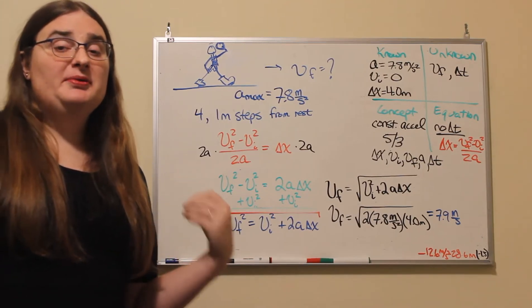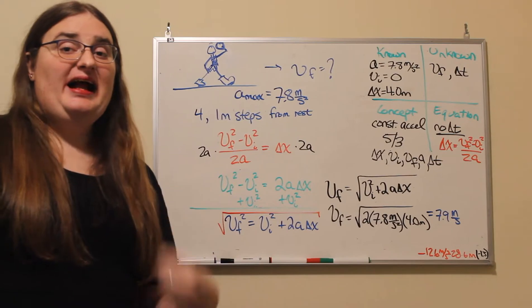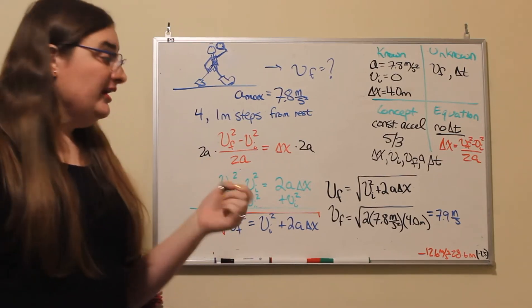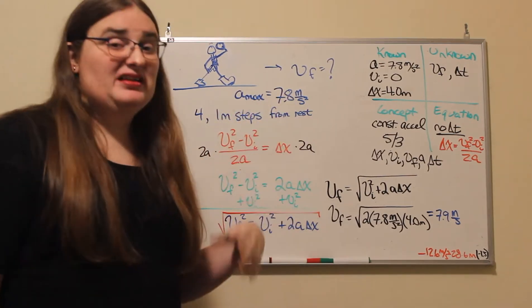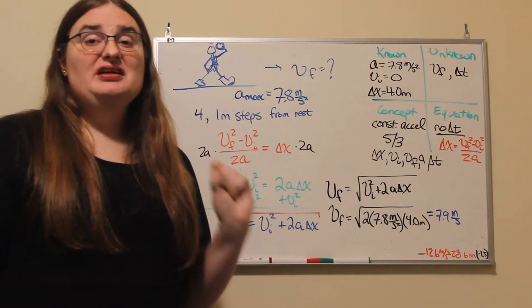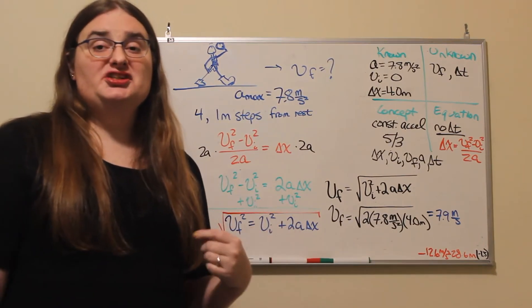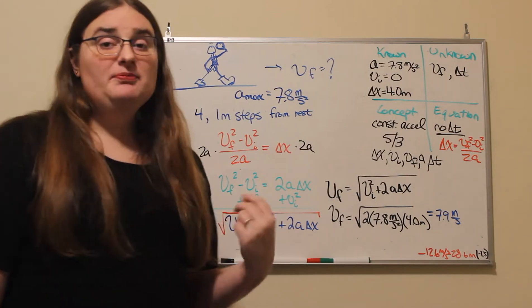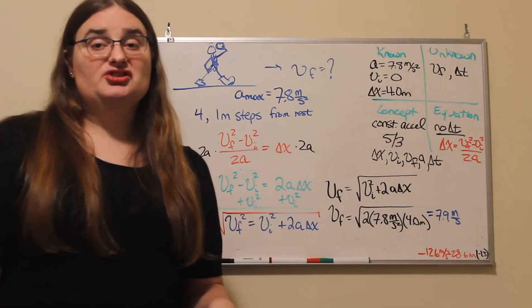So if you take a look at recommendations for designing athletic shoes, the recommendations say that the maximum acceleration that we would be able to achieve under those conditions would be about 7.8 meters per second squared.